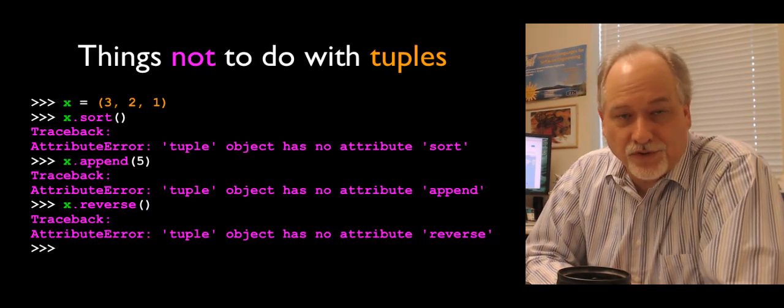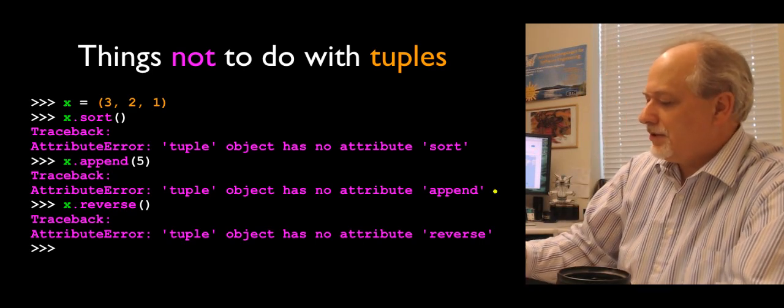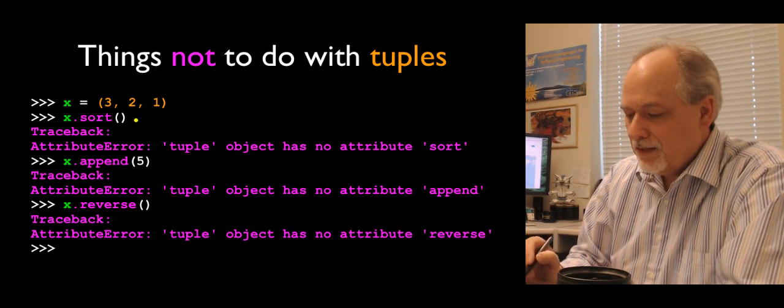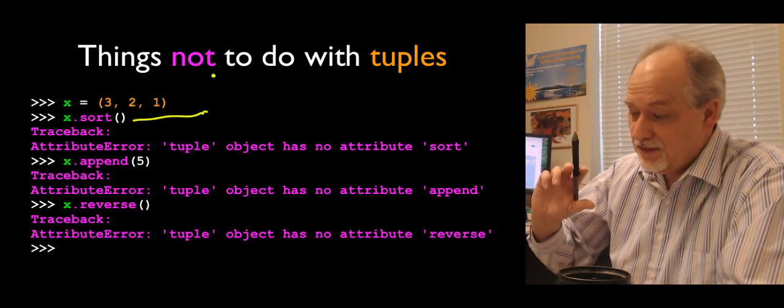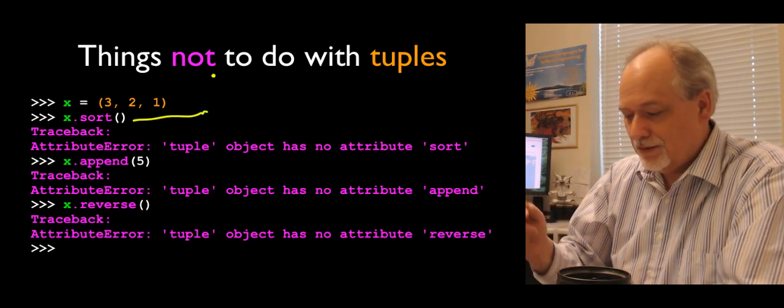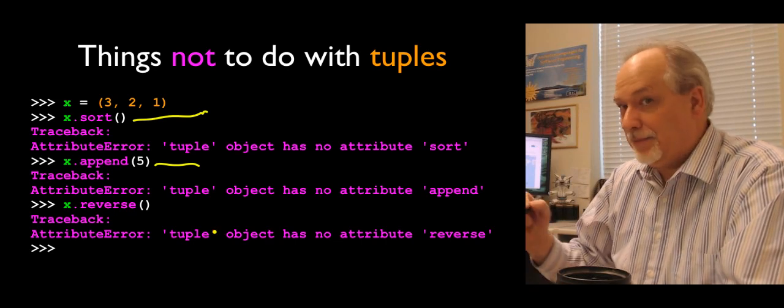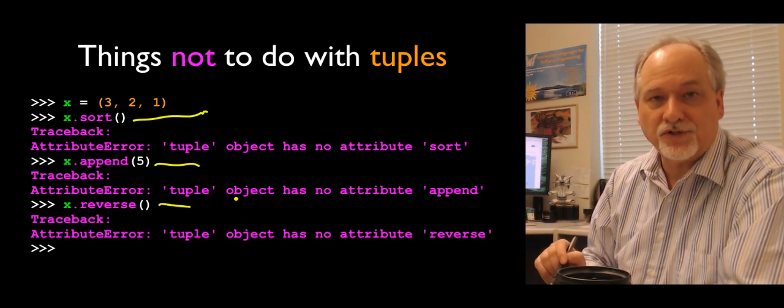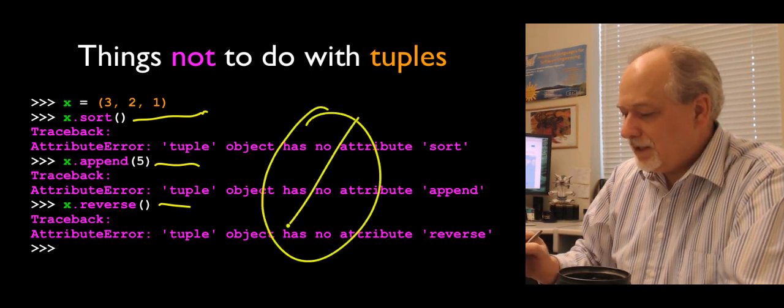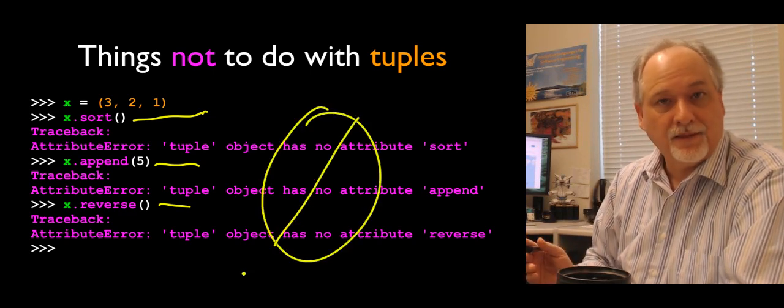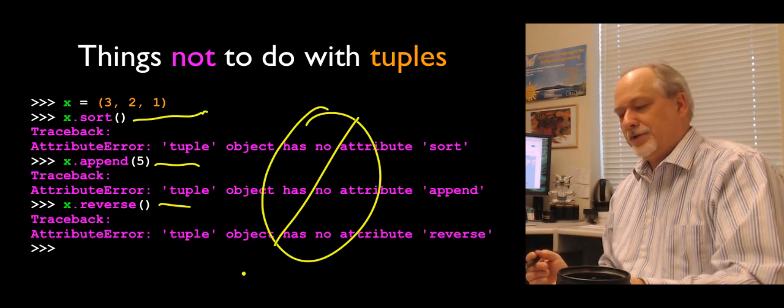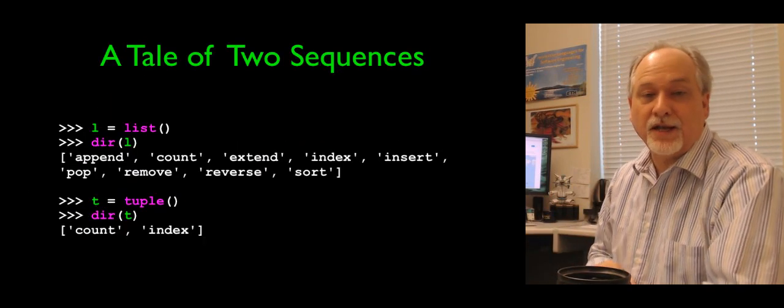There's a bunch of other things you can't do with tuples. Why even use tuples? We'll get to that in a second. So here is a three-tuple with the numbers 3, 2, 1. You can't sort it because if you sorted it, that would change it. You can't append the value 5 to the end of it because that would change it. And you can't reverse it. So none of these are allowed. Those are things you can do with lists, but you can't do with tuples.